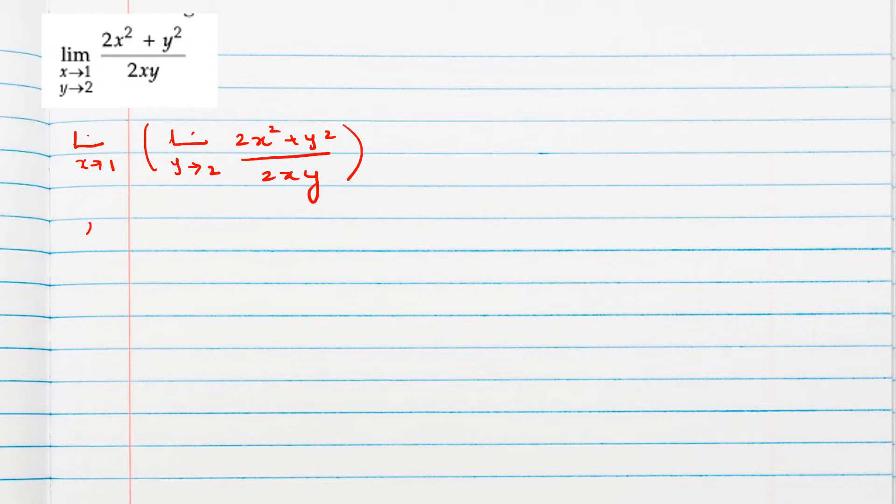Substituting y value as 2, we will get 2x square plus 2 square, 2x into 2. Finally we will get the function in terms of x: 2x square plus 4 divided by 4x, and then we can substitute x value 1.